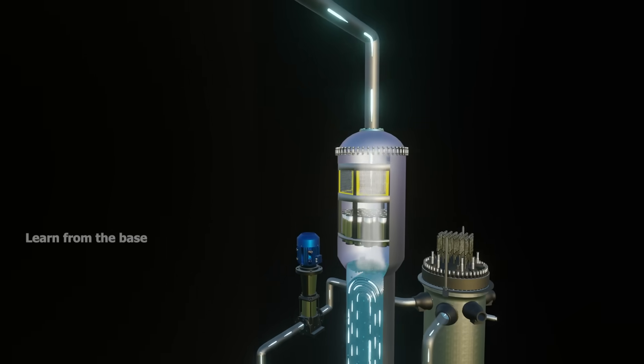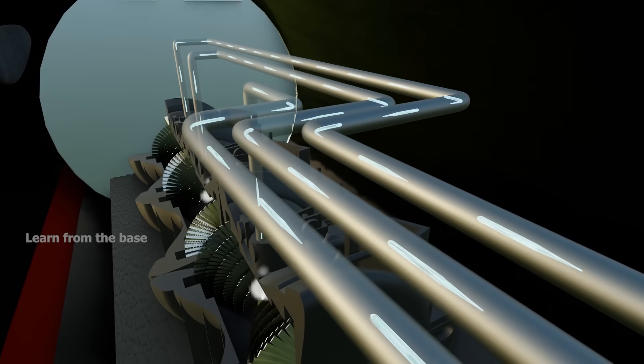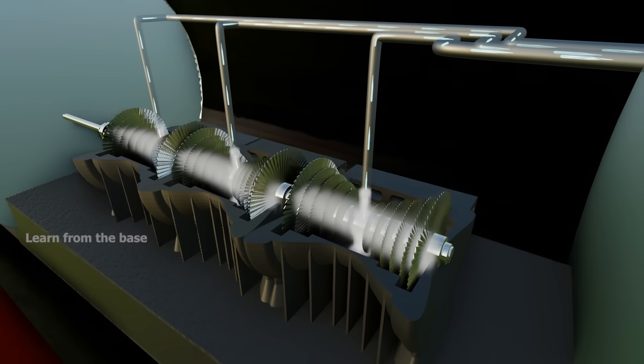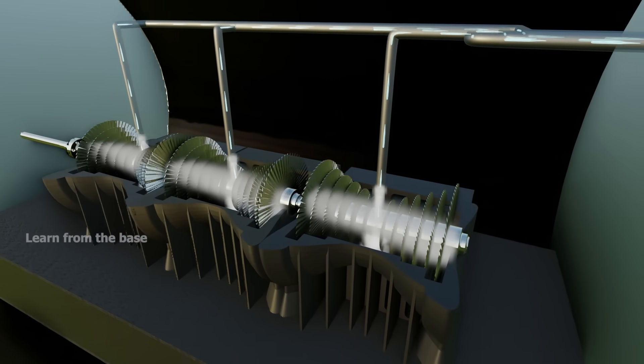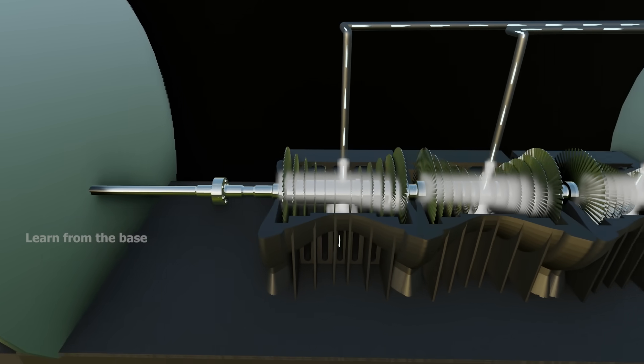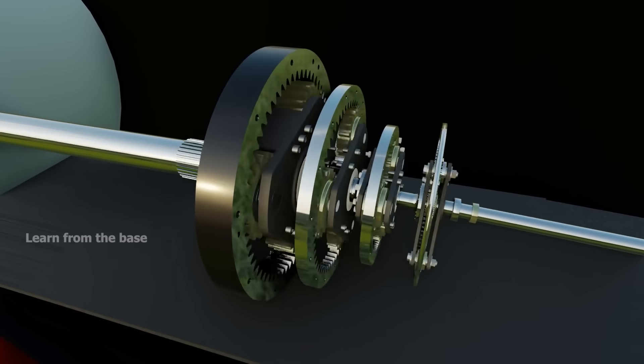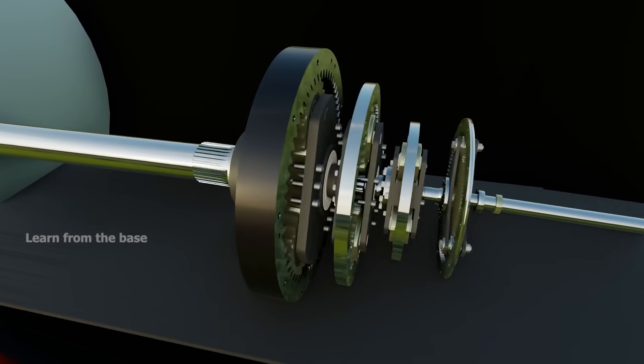This steam then travels to the turbine set to rotate the turbines. Then the rotating turbine turns a massive gear box. Then its power is transmitted to the propeller.